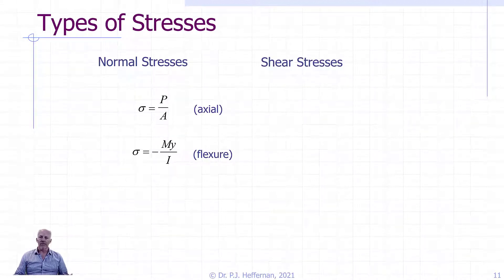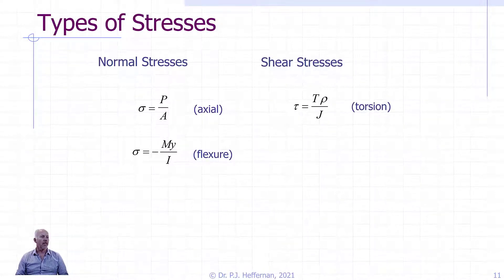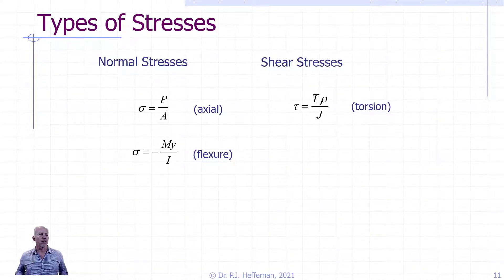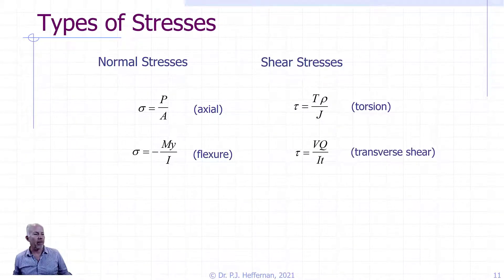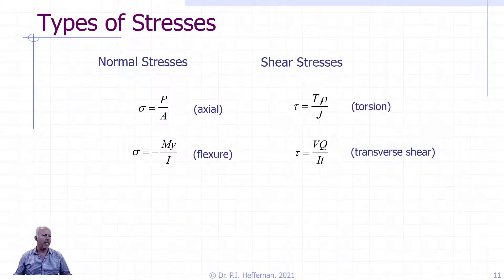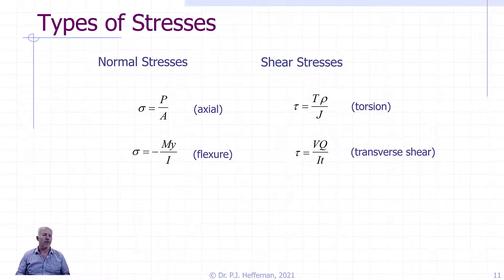We also have a couple of shear stress loading conditions. We had direct shear, which isn't on the slide but is obviously an option. We have the shear stress due to torsion, represented by T rho or TC over J — we've used a number of different variables to represent the distance from the center of our shaft. And then we have tau equals VQ over IT, which is the transverse shear stress resulting from bending. These are going to cause shear stresses parallel to the face, and we need to be able to calculate all of these and bring them together.